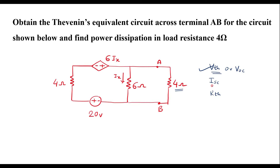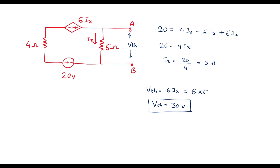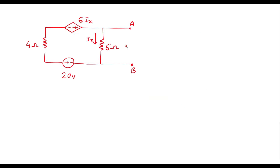Now let me calculate ISC. To calculate ISC, we have to short the terminals A and B. For the same circuit, we have to short terminals A and B. If we short terminals A and B, current will start flowing through the shorted path. That current is known as ISC.